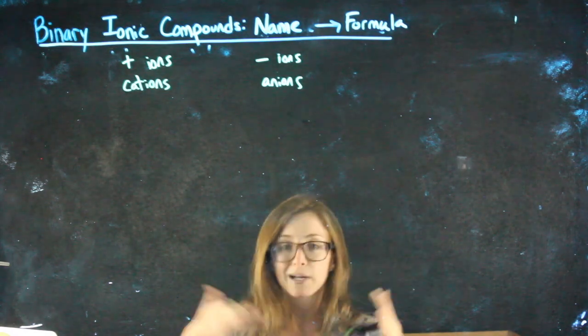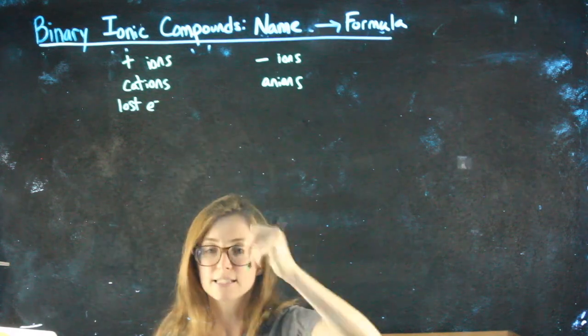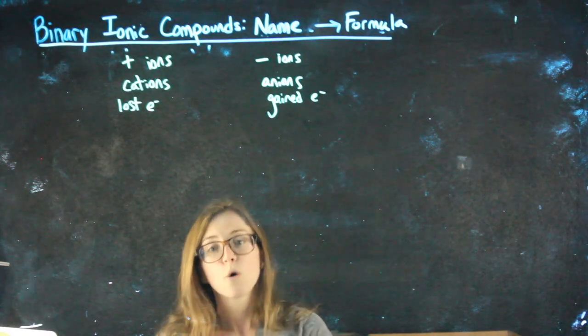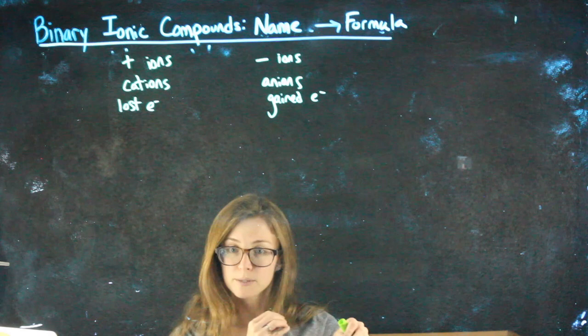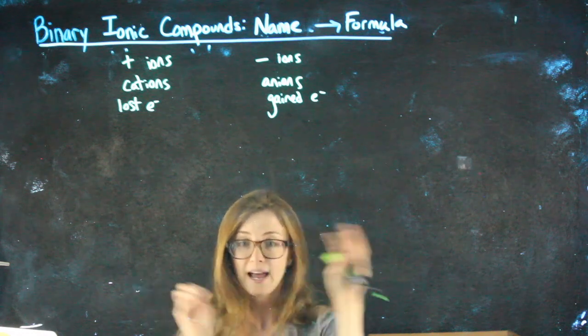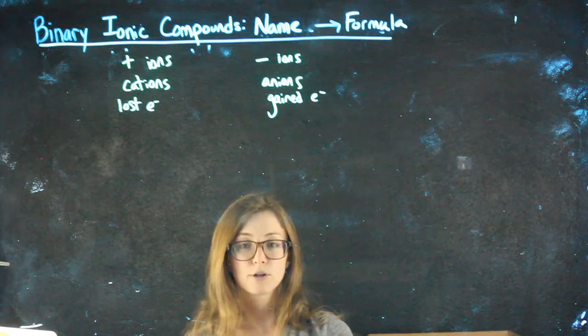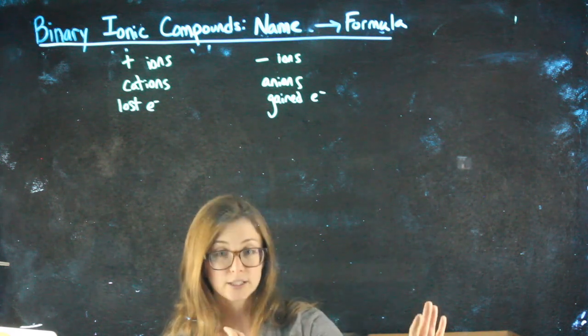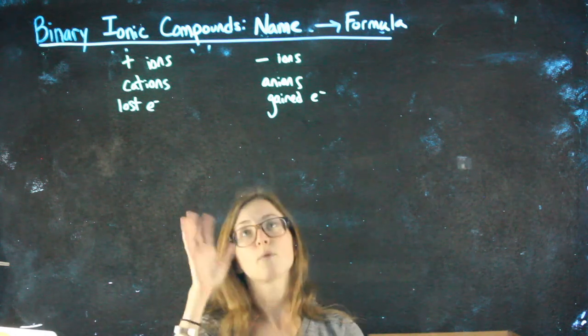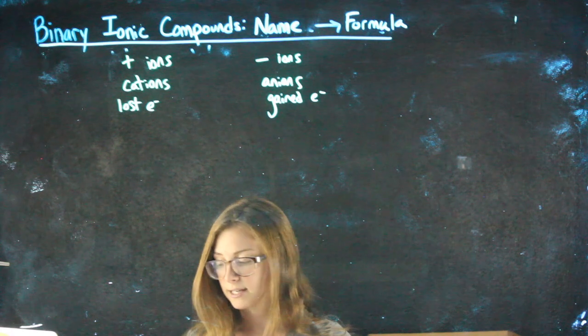I don't need you to know those names, but in case you've heard them before. So again, these have lost electrons, E minus is a shorthand for electron, and these have gained electrons. So when you have those subscripts like in Al2O3, that's telling us how many different atoms had to come together and exchange electrons so that overall we end up with a neutral compound.